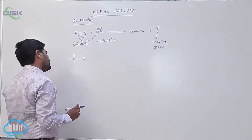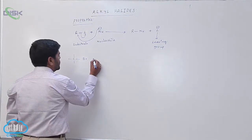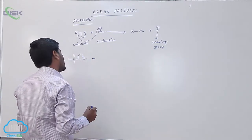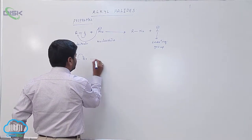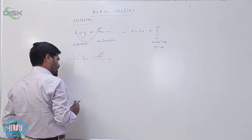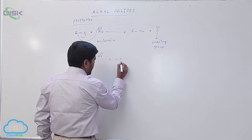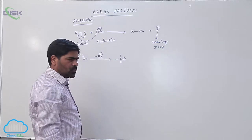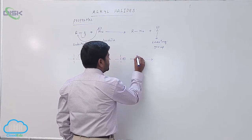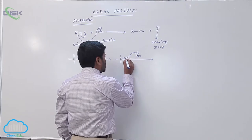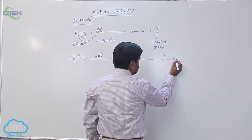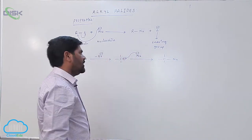For example, consider alkyl bromide with a C-Br bond. Due to the higher electronegativity of bromine, it withdraws electrons toward itself. So BR- acts as the leaving group from the substrate molecule, forming a carbocation — carbon carrying a positive charge — which is then attacked by a nucleophile NU- to form the product.